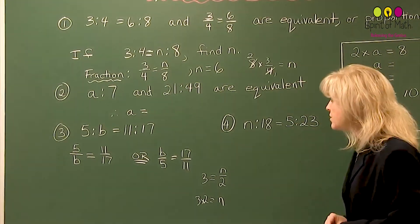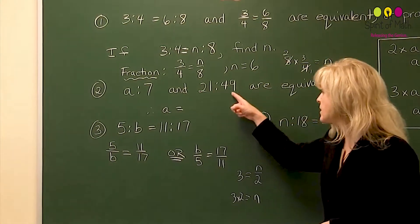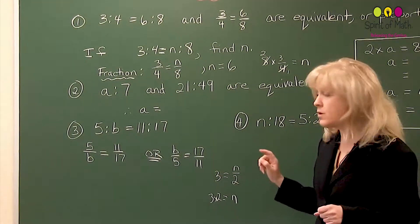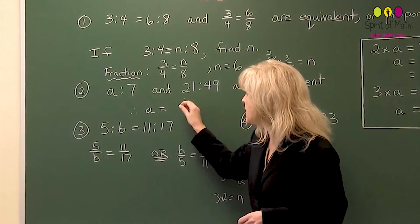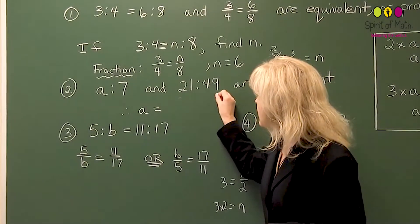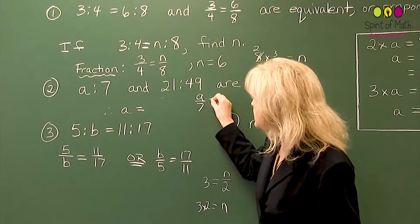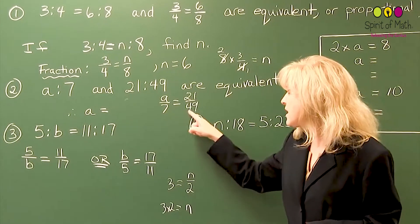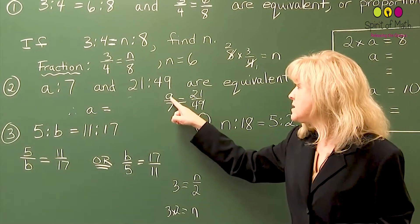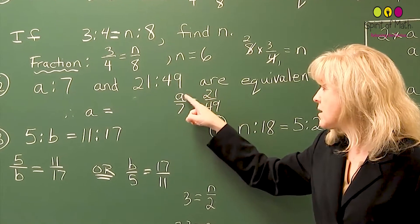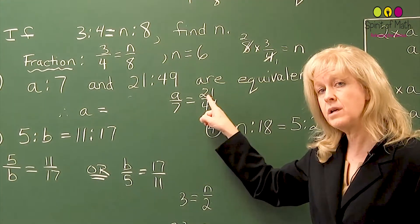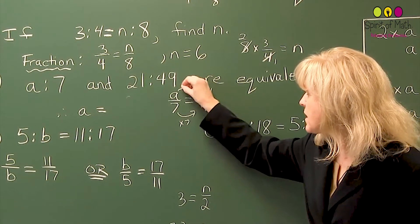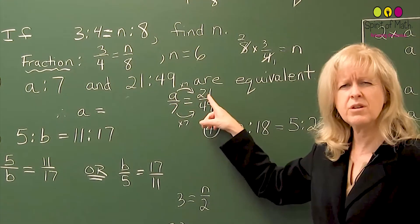Now, let's go to the next one. And this one, you have a to seven and 21 to 49 are equivalent. So therefore, you can figure out what a is. You have to know they're equivalent before you can figure it out. But basically, what you want to do is a to seven as a fraction is equal to 21 to 49. So seven times seven is 49. And so a times, or something times seven is equal to 21. Because you multiply this by seven, you need to do the same times seven. So what times seven equals 21? Well, that's three.